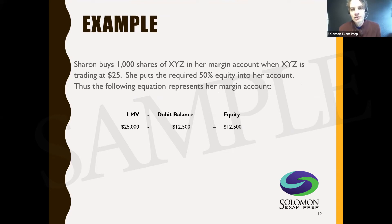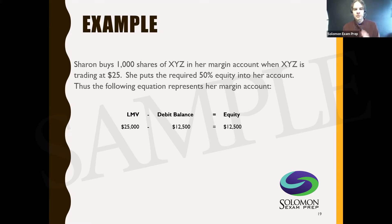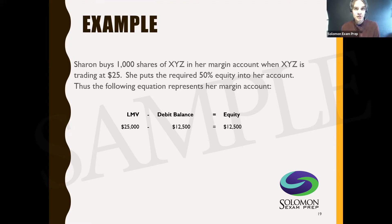For example, say Sharon buys 1,000 shares of XYZ in her margin account when XYZ is trading at $25. She puts the required 50% equity into the account. Her LMV is $25,000 (1,000 shares × $25), her debit balance is $12,500 — the 50% she borrows — and her equity is $12,500. So: $25,000 minus $12,500 equals $12,500.